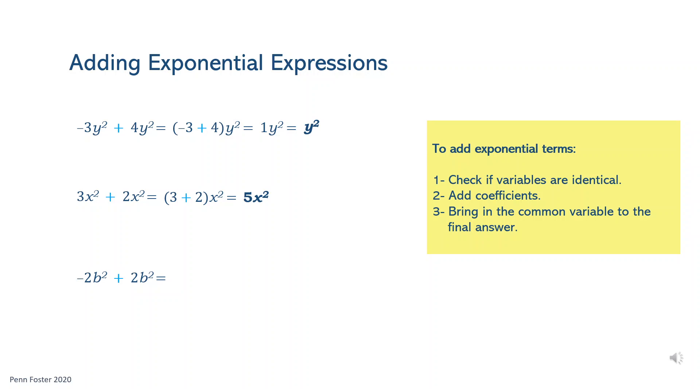For the last problem, again, the variables are identical. Add negative 2 and 2, which is 0. 0 times v squared is just 0, since any number or variable times 0 is 0.